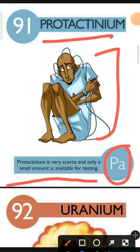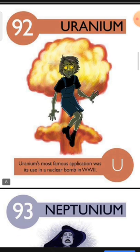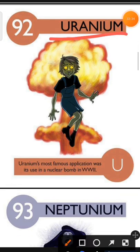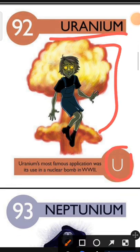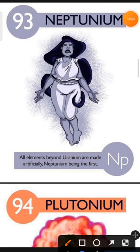Element number 92 is Uranium. The characteristic of Uranium is: Uranium's most famous application was its use in nuclear bombs in WWII. Element number 93 is Neptunium. The characteristic of Neptunium is: all elements beyond Uranium are made artificially, Neptunium being the first.